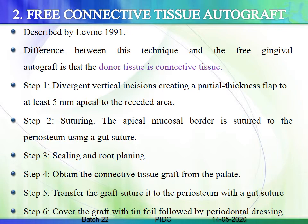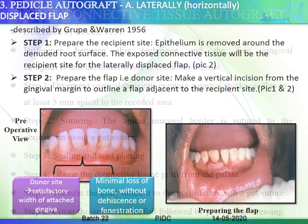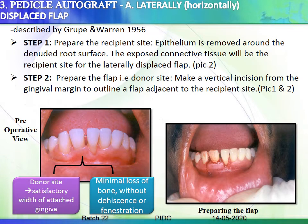Coming on to the third technique - the pedicle autograft - there are four techniques under this category. A pedicle graft is one where the graft material has not been completely detached from its parent tissue, unlike the free gingival autograft or free connective tissue autograft. Part of it remains attached to the parent tissue.